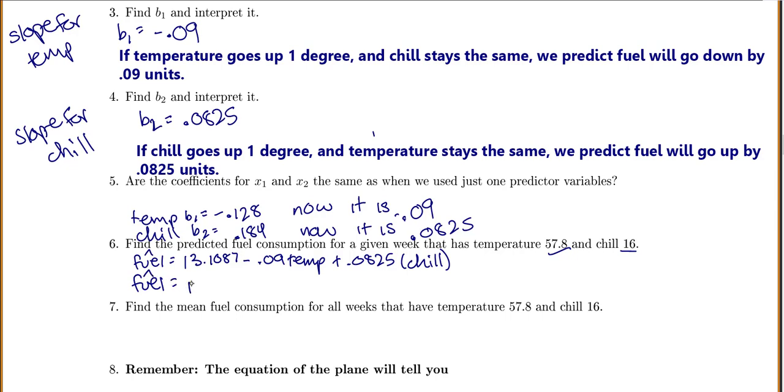So our predicted fuel, 13.1087 minus 0.09 times the temperature of 57.8, plus 0.0825 times our chill of 16. Putting that into my calculator, I get 9.22. So that's my predicted fuel for a week with those conditions.